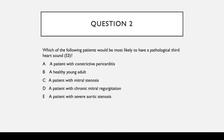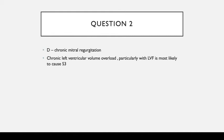Question 2: Which of the following patients would be most likely to have a pathological third heart sound? A — constrictive pericarditis; B — a healthy young adult; C — mitral stenosis; D — chronic mitral regurgitation; E — severe aortic stenosis. The answer is D, chronic mitral regurgitation, because there is chronic left ventricular volume overload causing left ventricular dilatation and left ventricular failure, making S3 most likely. In severe aortic stenosis, you get S4.